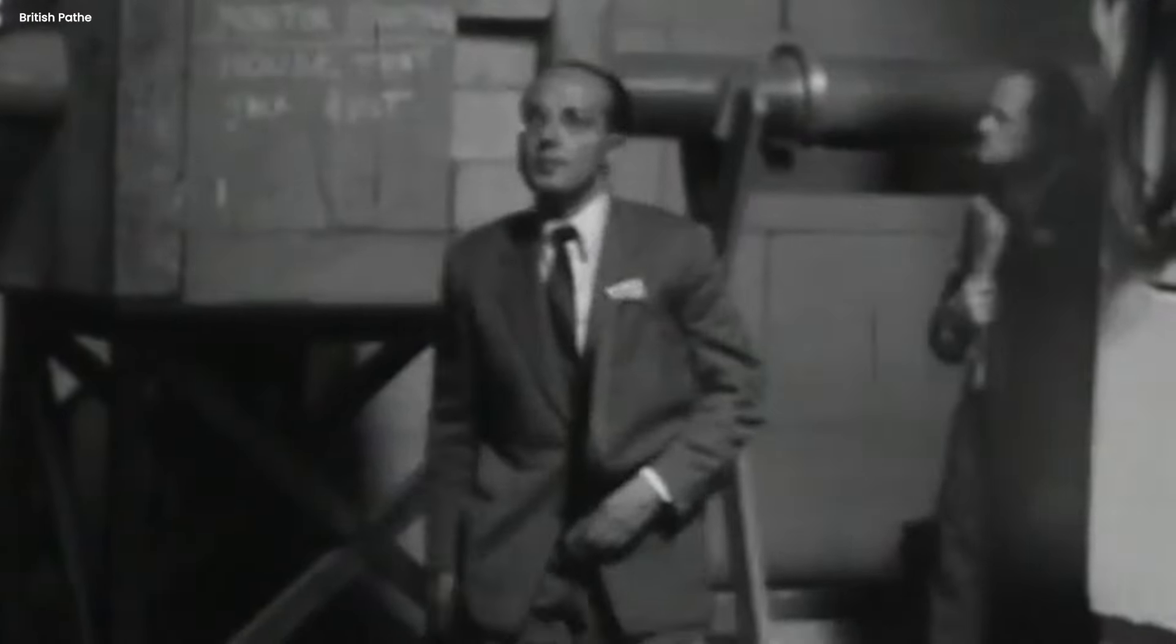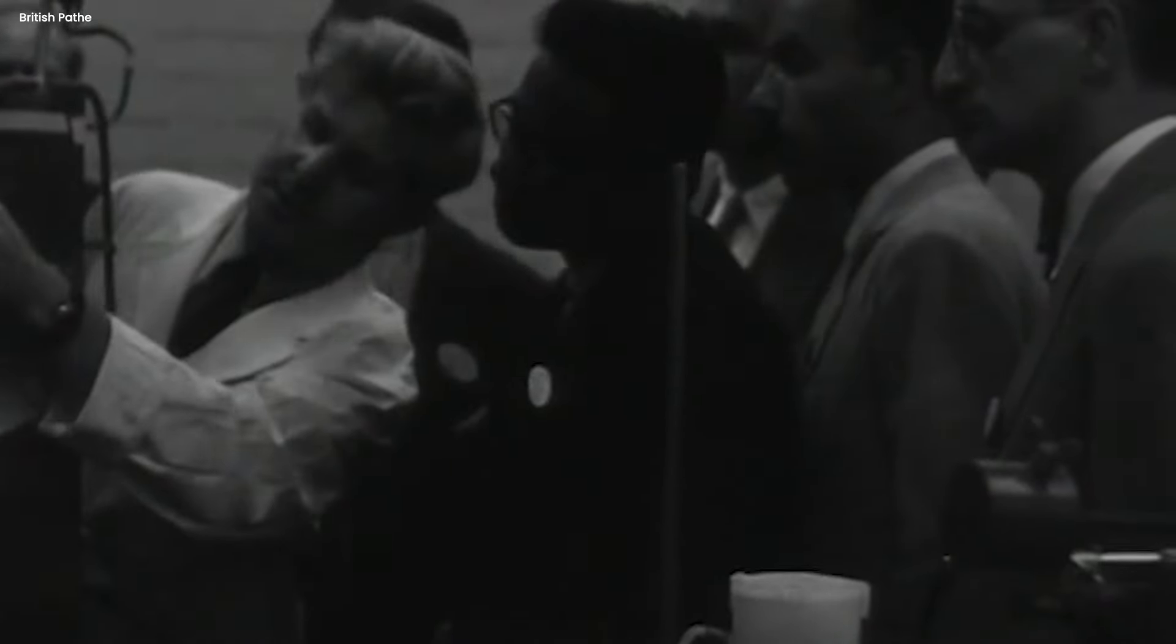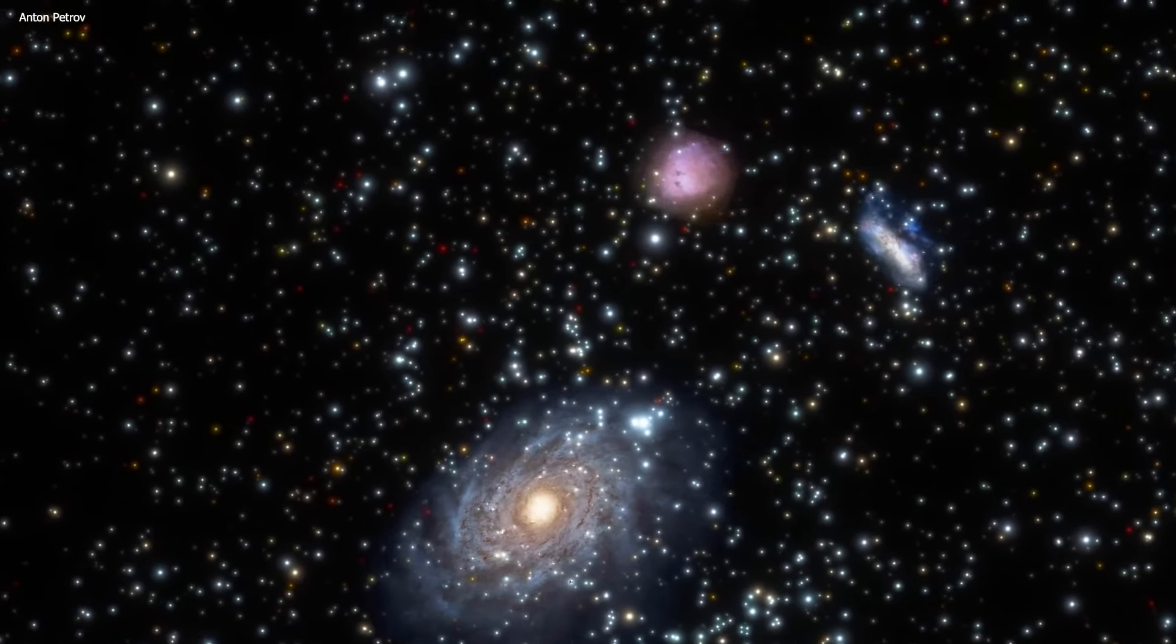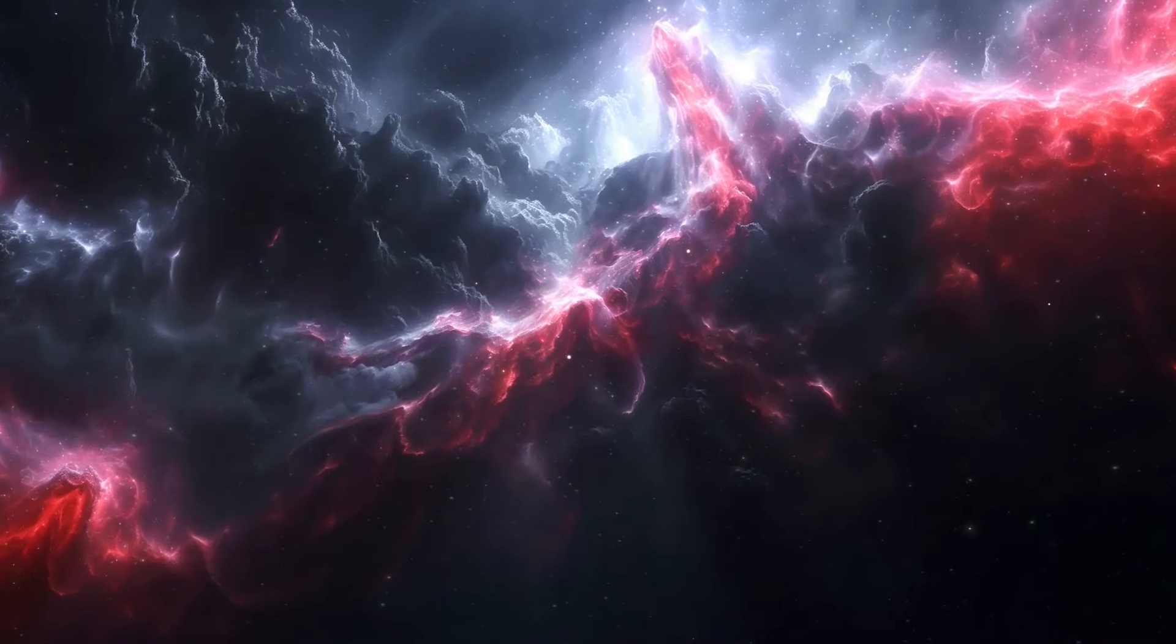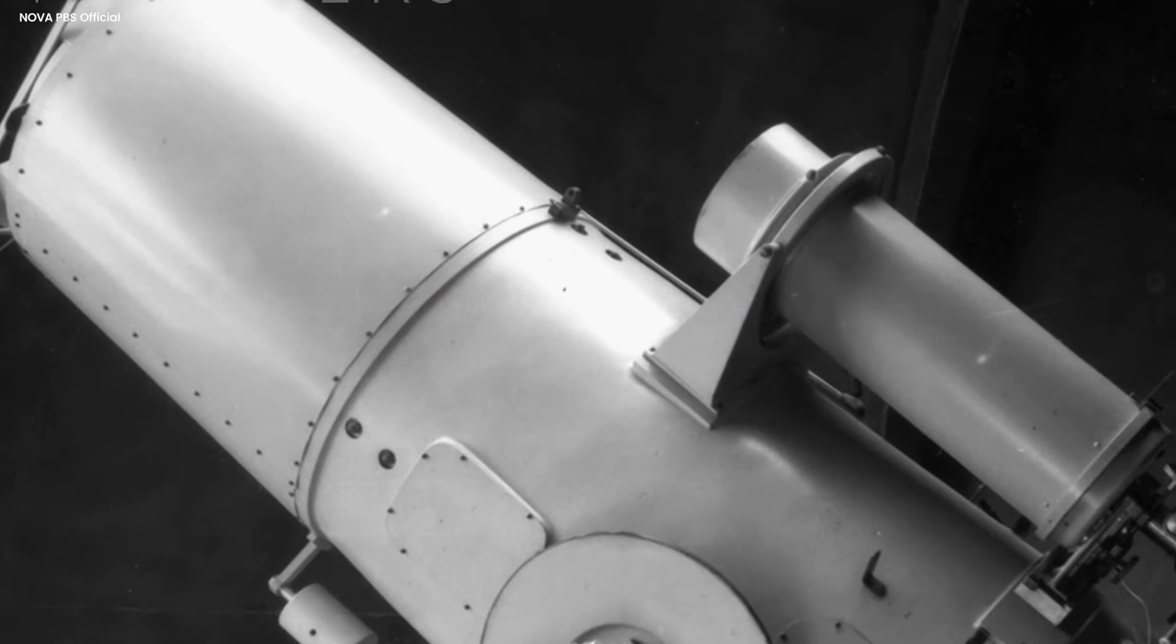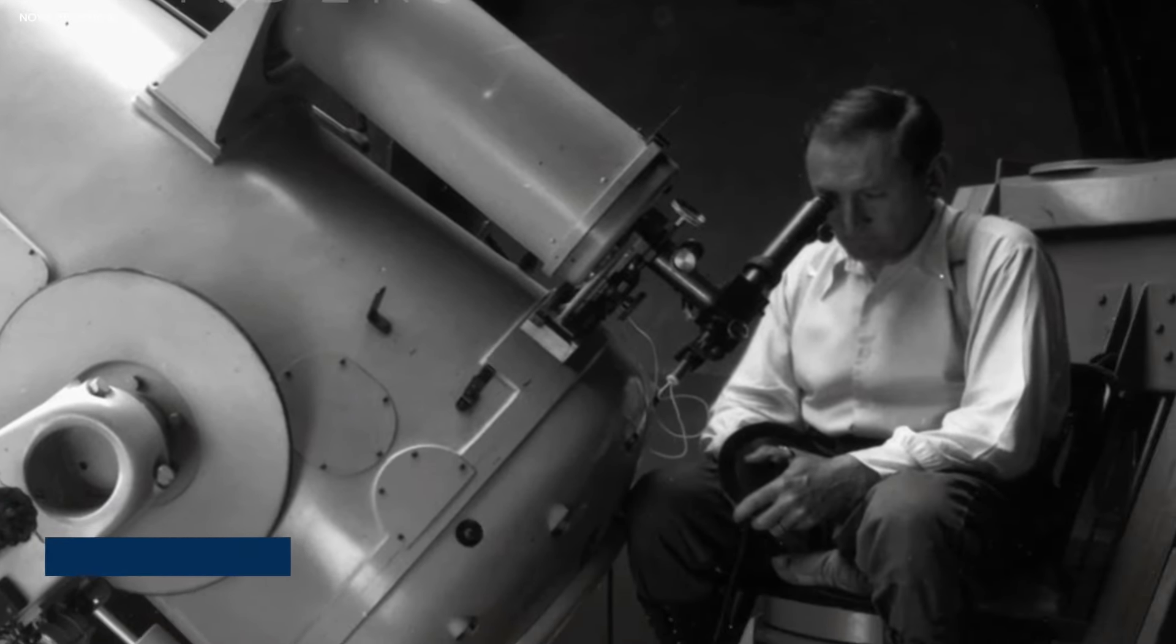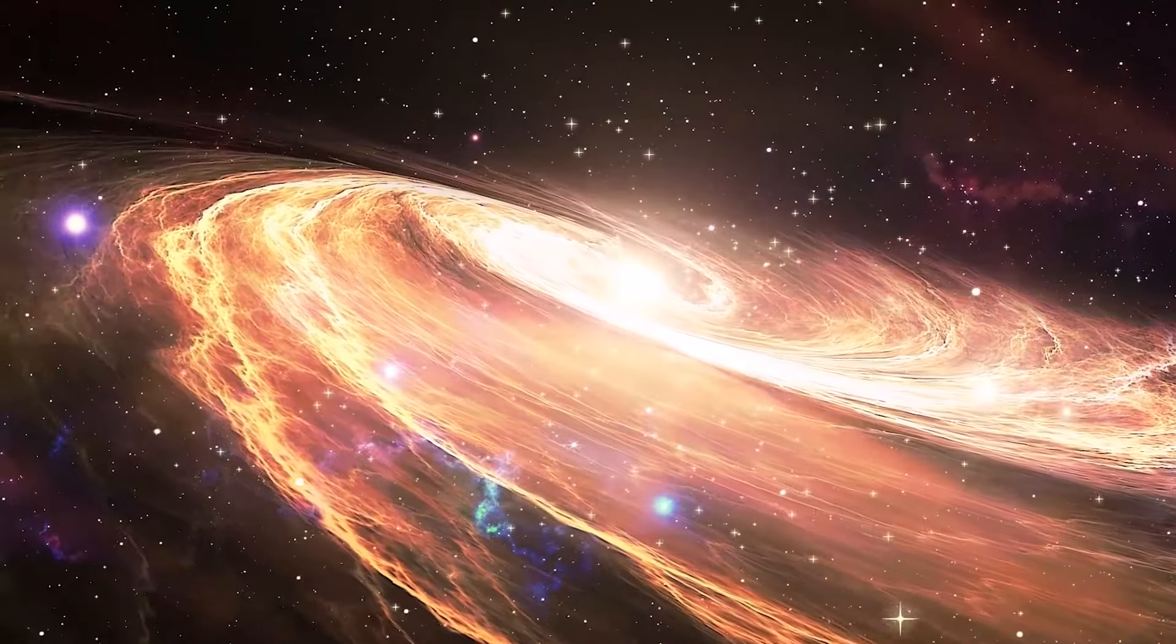Now Zwicky and the other astronomers of that era weren't quite sure what this invisible stuff was. Maybe there were unseen galaxies out there, or giant clouds of gas we couldn't detect. But whatever it was, Zwicky knew it was important. He even gave it a name, Dunkelmaterie, which translates to dark matter in German.